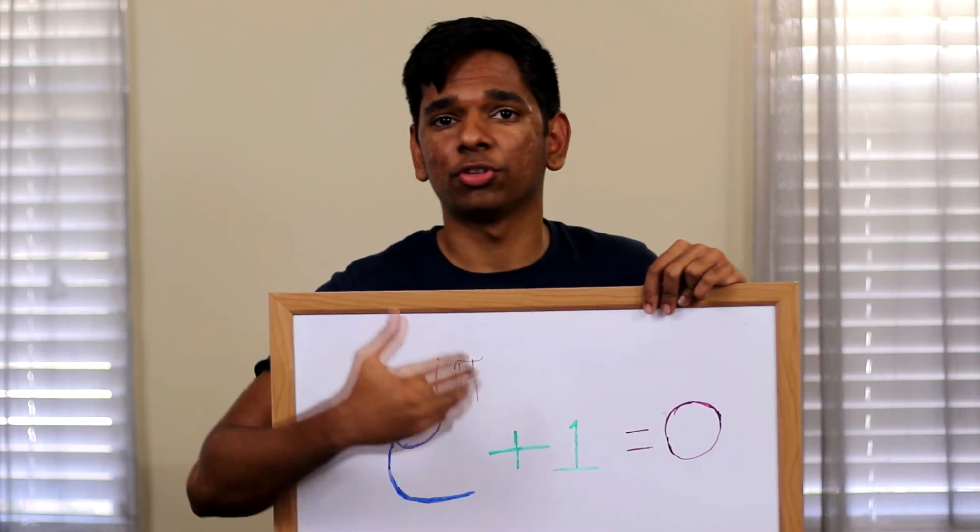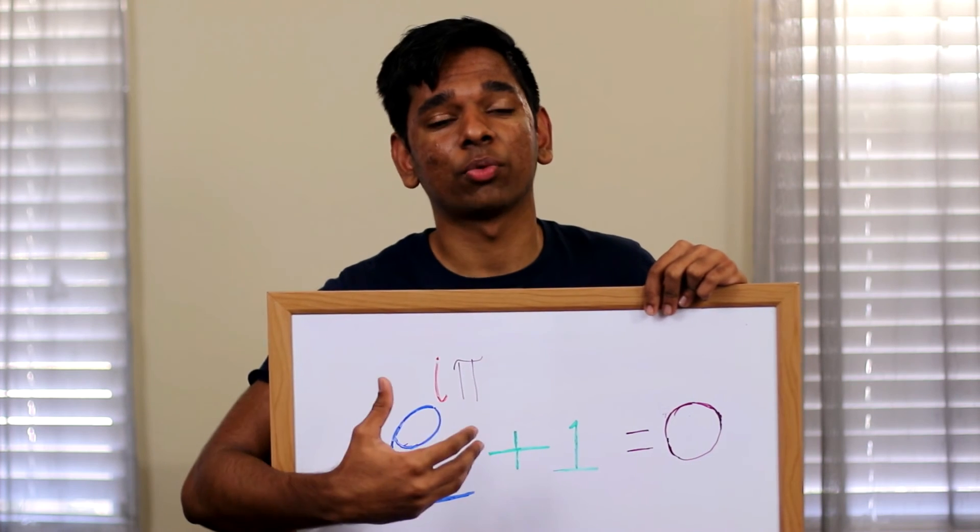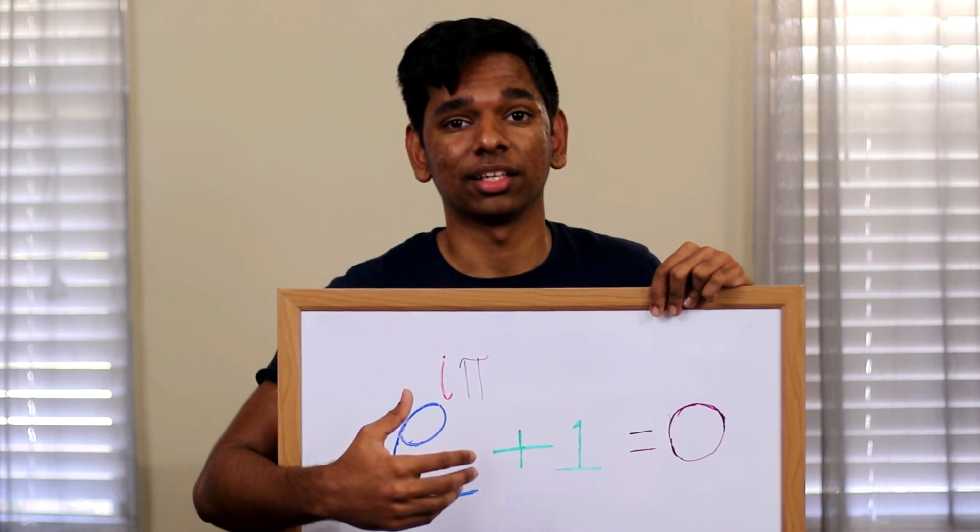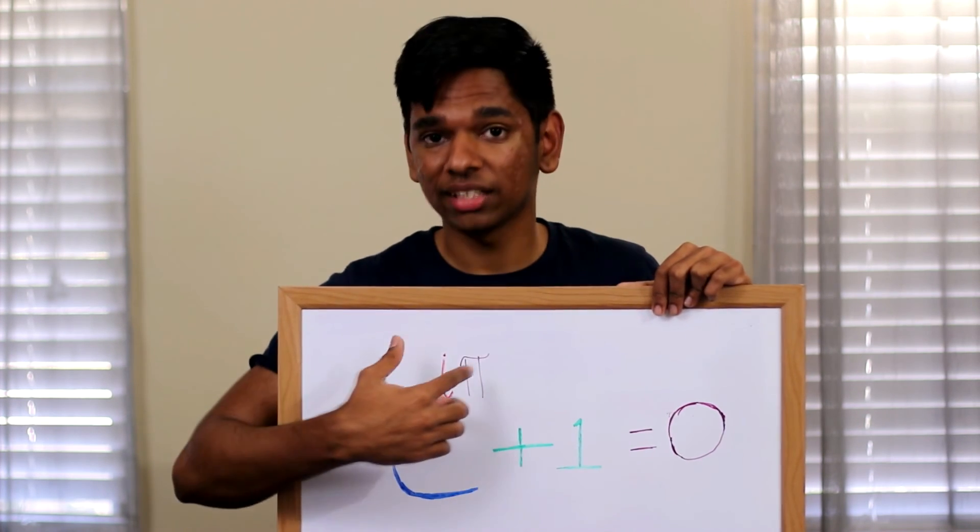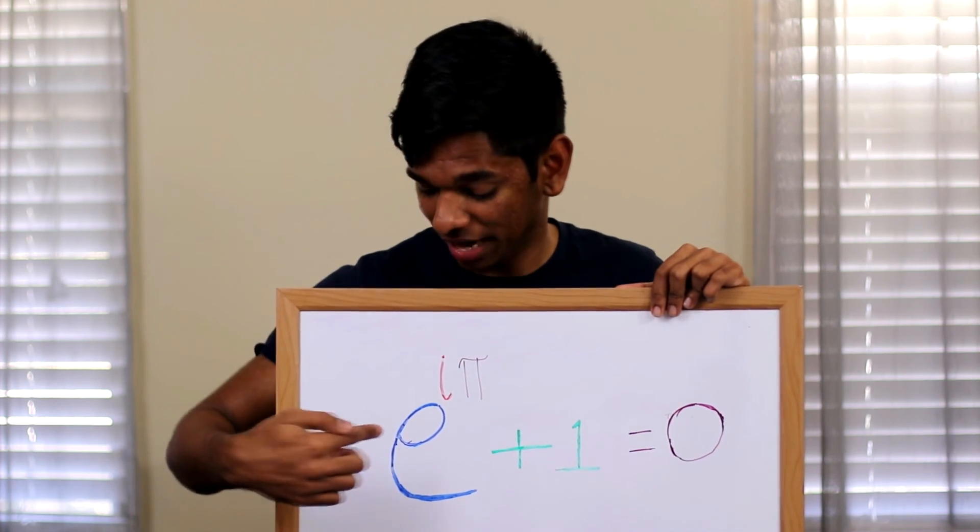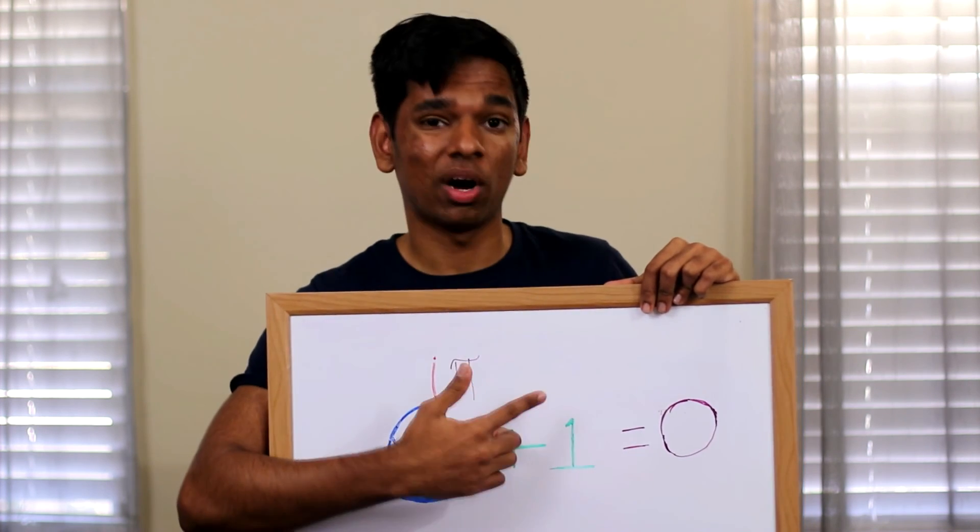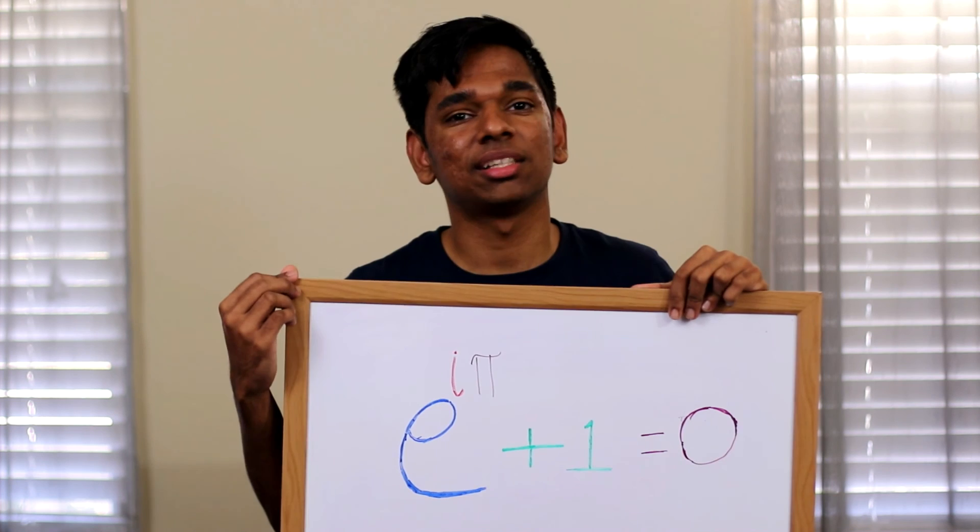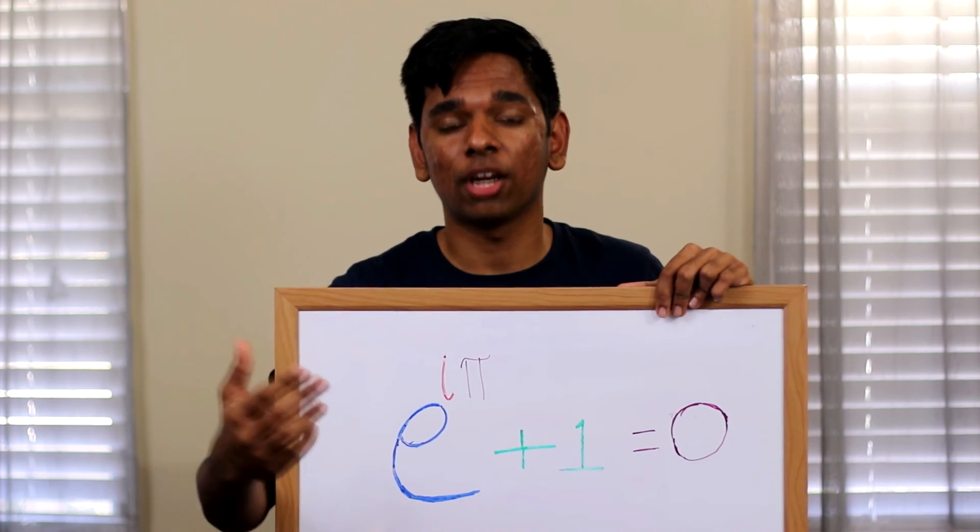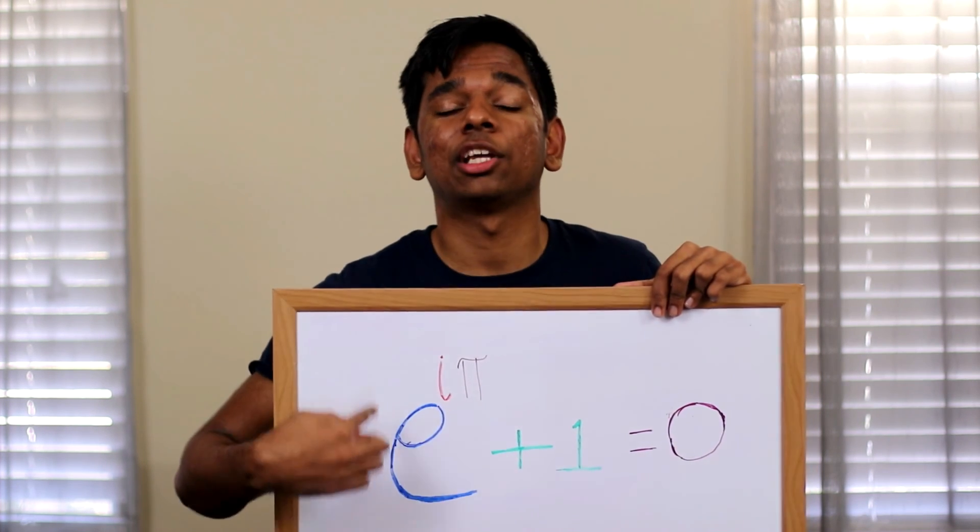After viewing this video, it should be no surprise why this equation tops that list. It connects the five biggest constants in mathematics—e, i, π, 1, and 0—in such a simple and elegant manner, along with the fundamental operators: addition, multiplication, and exponents.